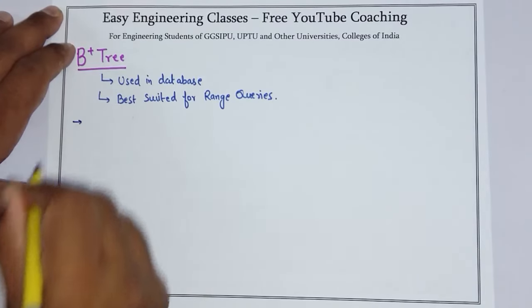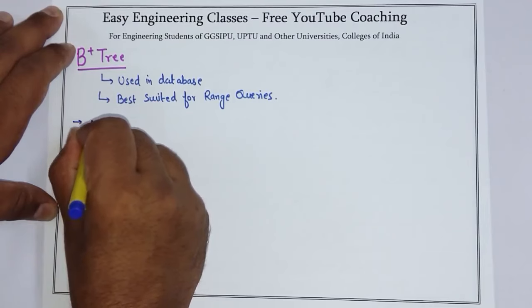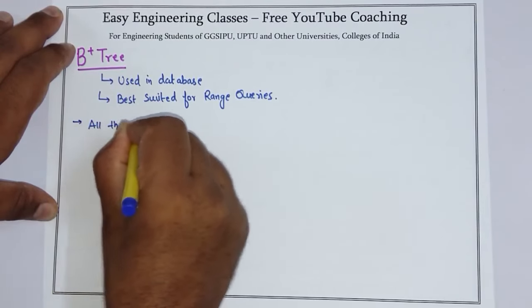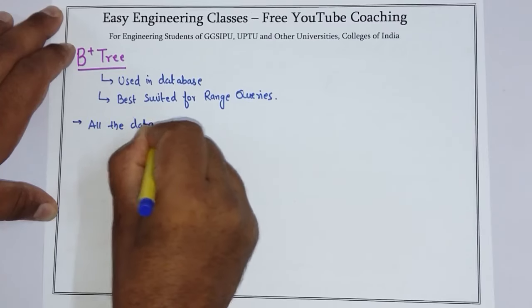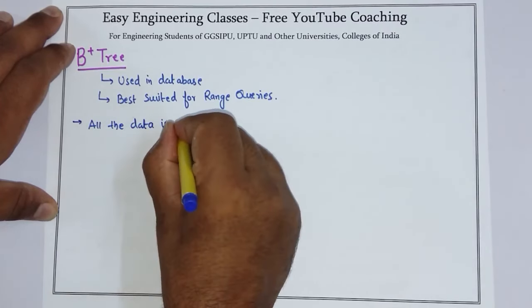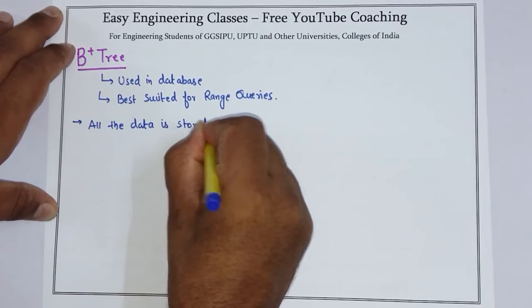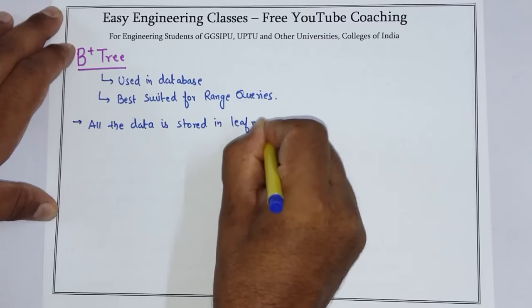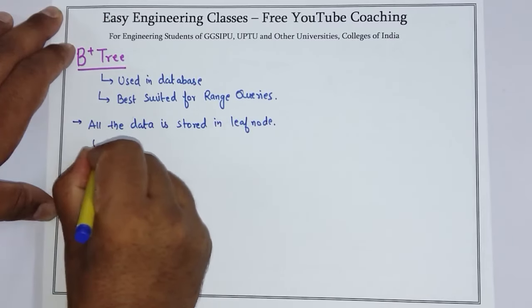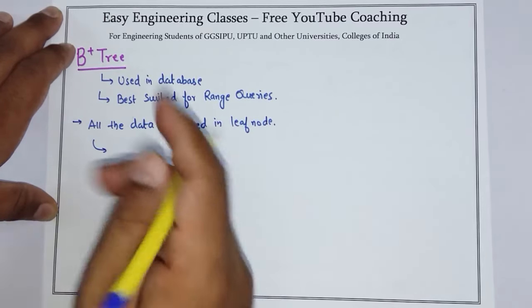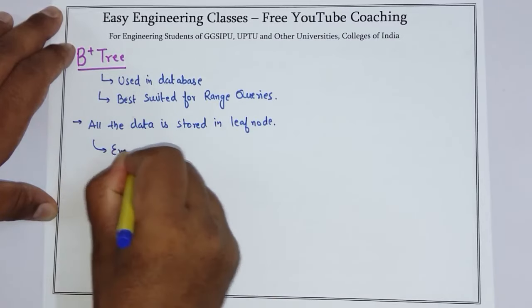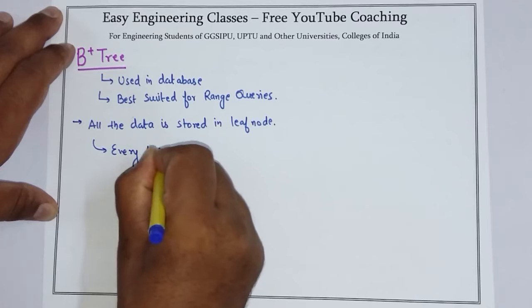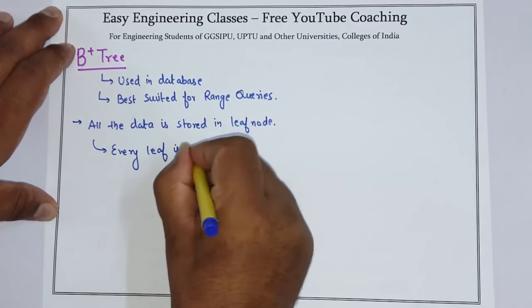B plus tree has some important points. First, all the data is stored in leaf node. What does this mean? Whatever data you have, it will be at the same level. We can say that every leaf is at the same level.